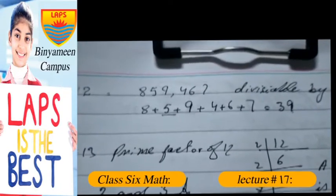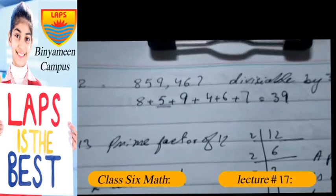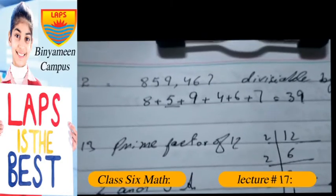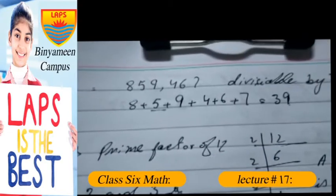The answer to this question is 859,467 because the sum of these numbers is equal to 39 and it is exactly divisible by 3.